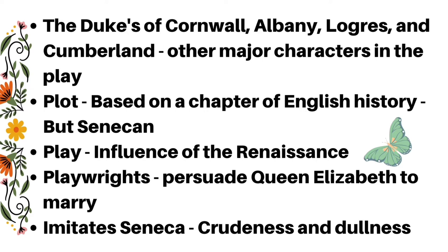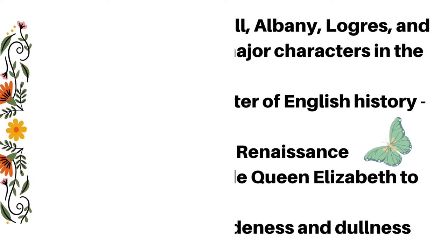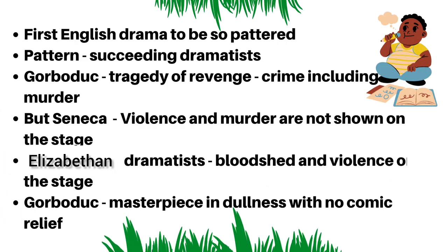The plot of Gorboduc is based on a chapter of English history, but the treatment of the material is altogether Senecan. The play clearly displays the influence of the Renaissance. It also clearly indicates the playwrights' aim to persuade Queen Elizabeth to marry. Gorboduc imitates Seneca slavishly with all crudeness and dullness. It was the first English drama to be so patterned, and this pattern was afterwards followed by succeeding dramatists.